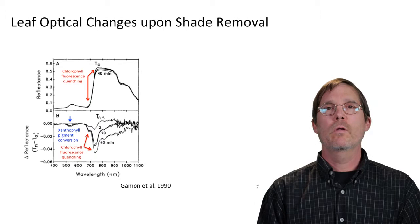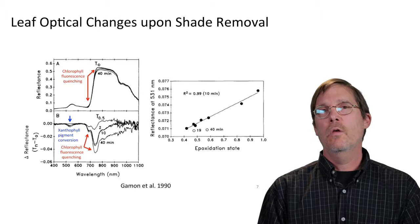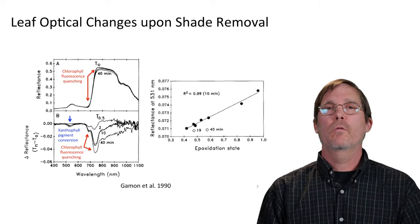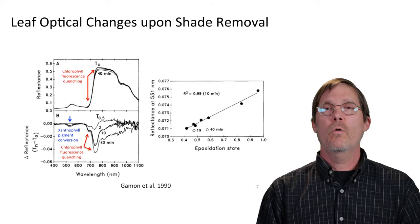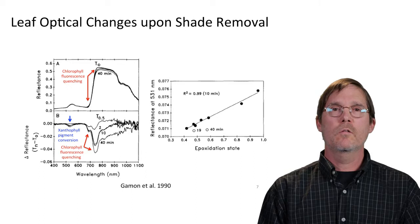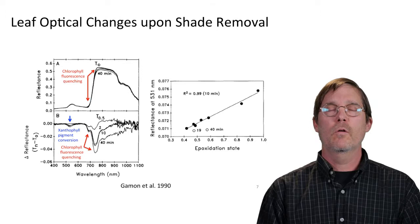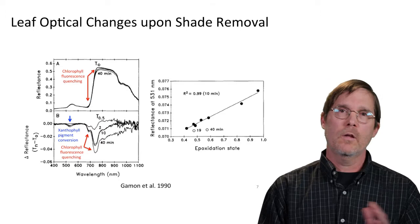We confirmed this by taking leaf samples from the canopy as measurements were being made, extracting the pigments, and comparing the actual pigment content and epoxidation state to the reflectance spectra. Over the first 10 minutes we found a very strong relationship between the epoxidation state of the xanthophyll cycle pigments and the reflectance signal at 531 nanometers.